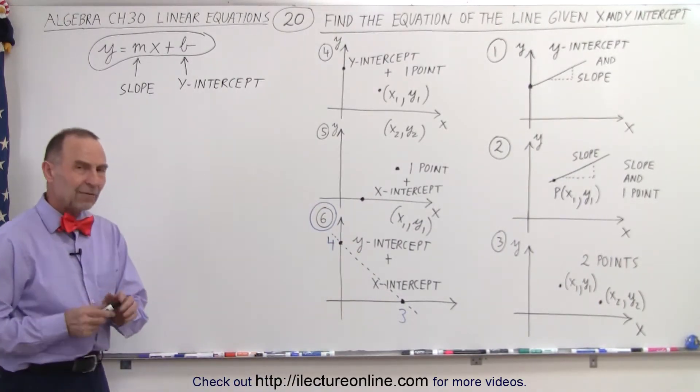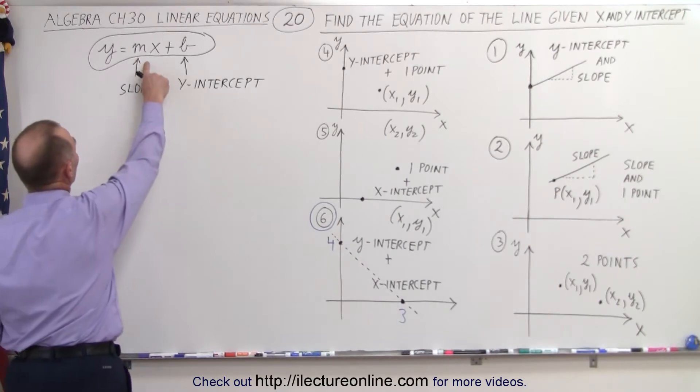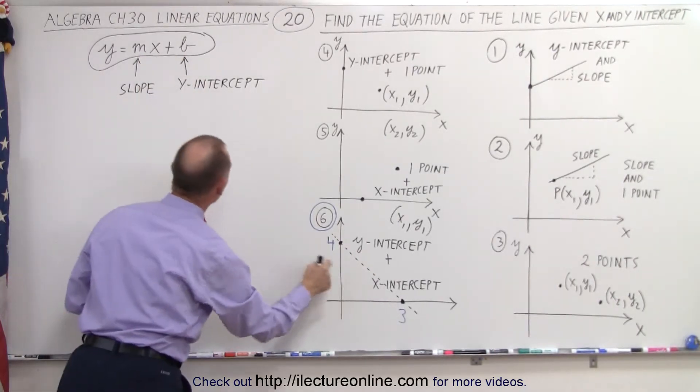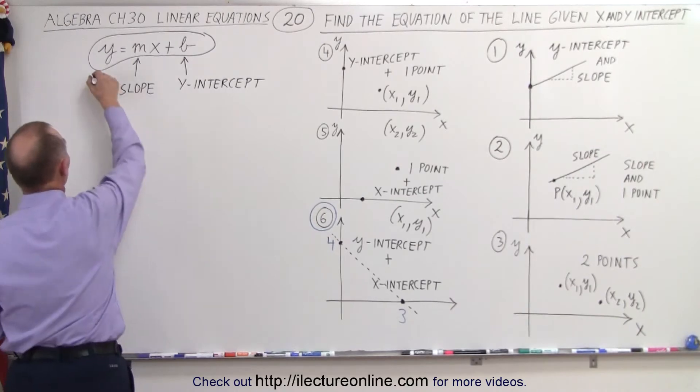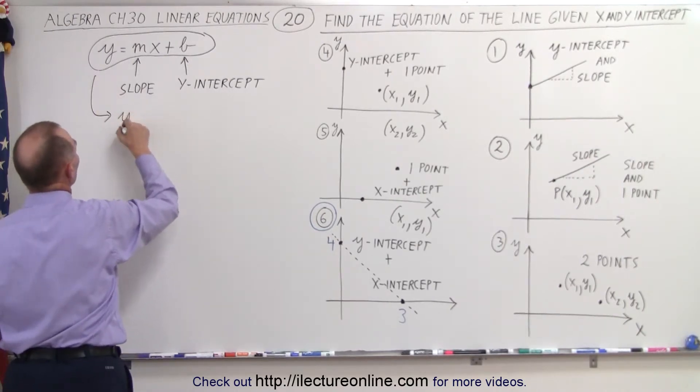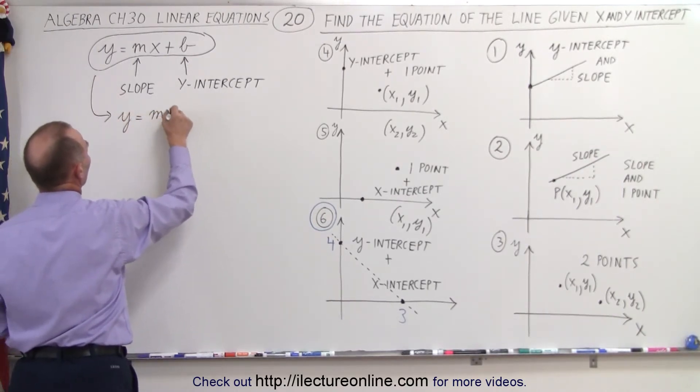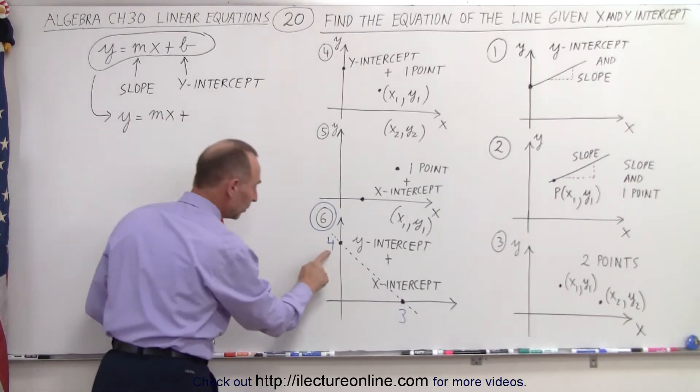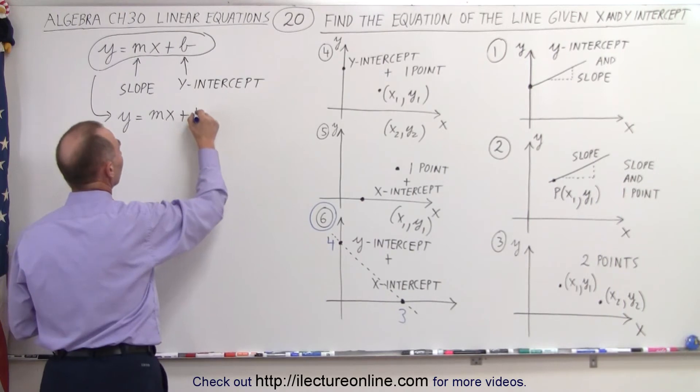So at least they give us one of the two unknowns in our equation. We need to find the slope and the y-intercept. They give us the y-intercept so we can go ahead and right away start by plugging that into the equation. So y is equal to mx plus, in this case, instead of b, we can go ahead and plug in what b is equal to, which is 4.